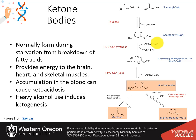Ketone bodies typically form during periods of starvation when carbohydrate stores have been depleted. When the liver can no longer efficiently maintain blood glucose levels, it will break down fatty acids into ketone bodies. Ketone bodies such as acetoacetate, acetone, and beta-D-hydroxybutyrate — which isn't a real ketone but is still referred to as a ketone body — are released into the bloodstream to compensate for reduced glucose levels. Brain, heart, and skeletal muscle tissue can utilize ketone bodies as an energy source. However, the formation of lactate and ketone bodies can severely reduce blood pH levels and induce a life-threatening state known as ketoacidosis.